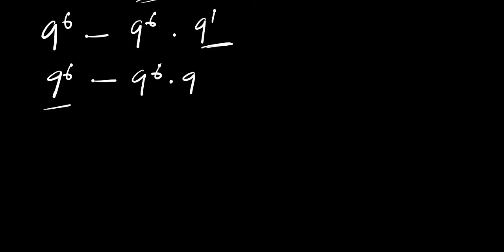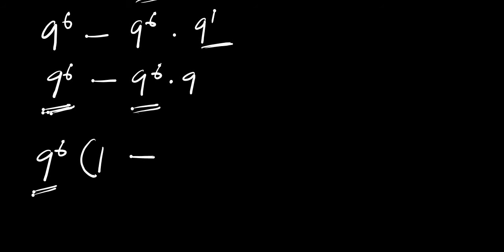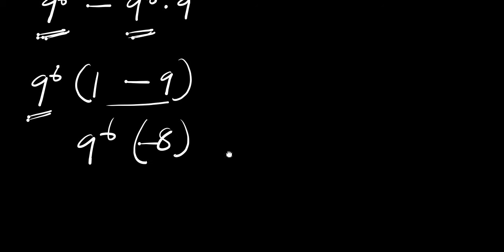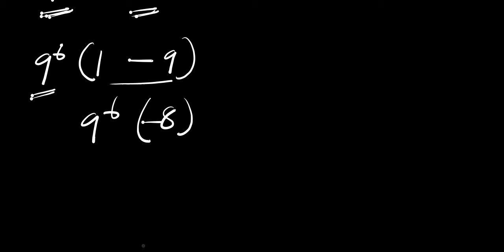Now we have 9 power 6 here and 9 power 6 here — we can factor that out. We have 9 power 6 times the bracket: 9 power 6 divided by 9 power 6 gives 1, and 1 minus 9 is negative 8. So this gives us 9 power 6 times negative 8.